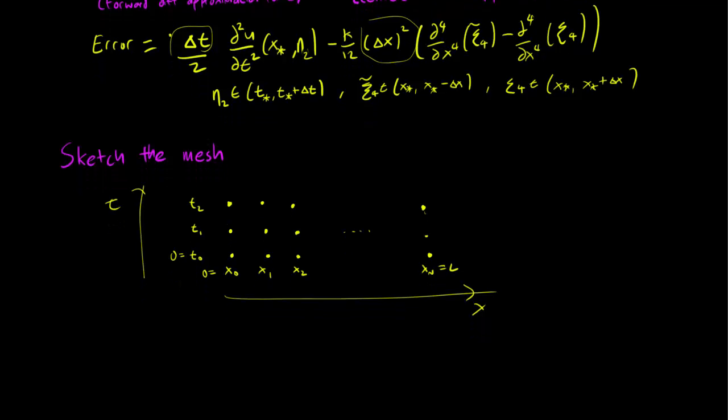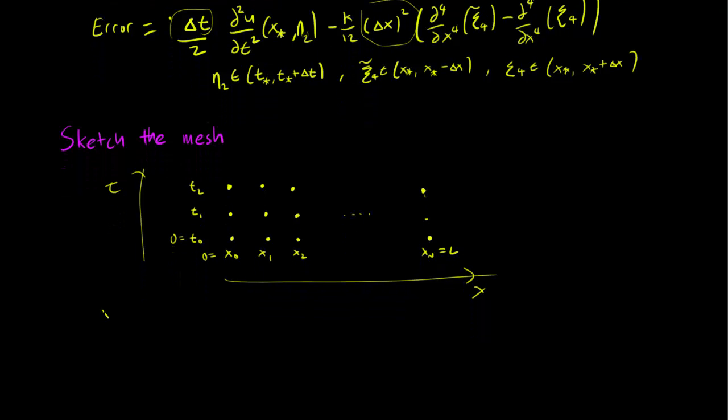And the point is that we start at x_0 equals 0. And then we increment all the x's by the delta x. This is x_2 equals 2 delta x and so on until we get to x_n equals n delta x which is equal to L. So we set n so that n delta x is exactly equal to L.